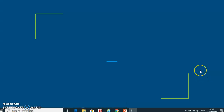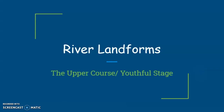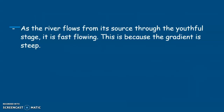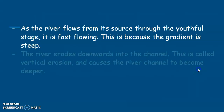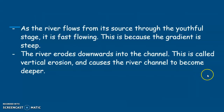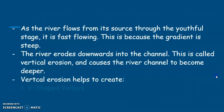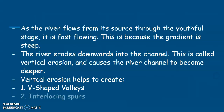Today we're going to start looking at features of the upper course — river landforms of the upper course or youthful stage. As the river flows from its source in the youthful stage, it is fast flowing because of steep slopes and steep gradient, and that causes erosion. That erosion is downward or vertical in the river channel, causing the channel to become deeper and creating features such as v-shaped valleys, interlocking spurs, and waterfalls.